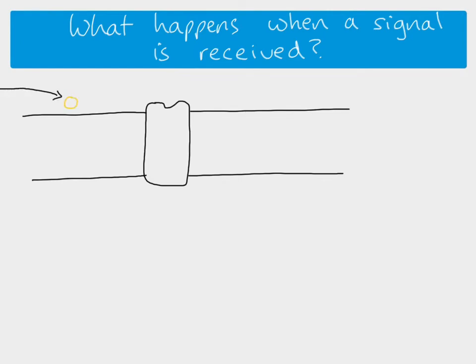First of all, if a signaling molecule comes in and that signaling molecule is lipid based, so it's able to pass through the phospholipid membrane, then it does just that. It's able to just pass straight through the hydrophobic core and go directly into the cell. Any hydrophobic signaling molecule can do that. The steroid hormones are an example, like estrogen.